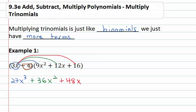The negative 4 now needs to distribute through the next polynomial. Negative 4 times 9x squared is negative 36x squared. Negative 4 times 12x is negative 48x, and finally negative 4 times 16 is negative 64.